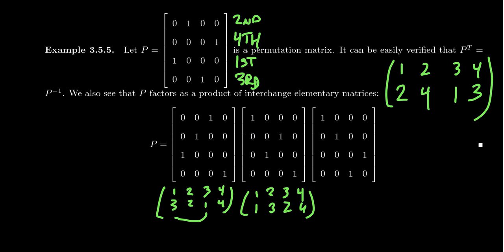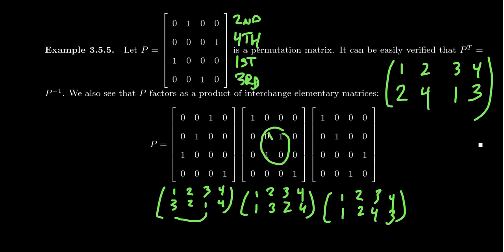With an interchange matrix, you only swap two rows. In the third example shown, the first and second rows are left alone, and the third and fourth rows get swapped. You can identify these because the ones are no longer on the diagonal where they're supposed to be — that's how we can identify interchange matrices.